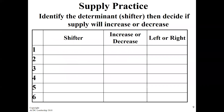If you take out your note sheet from the last class, you'll have supply and demand. The determinants of demand are TIMER: Tastes and Preferences, Income, Market size, Expectations, Related goods — substitutes and complements. So we've got tastes and preferences, income, market size, expectations.